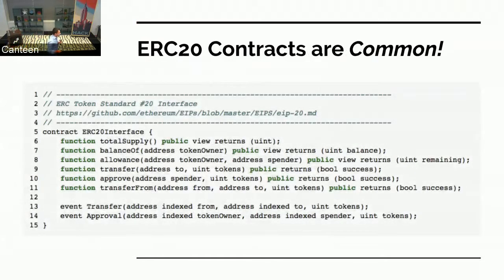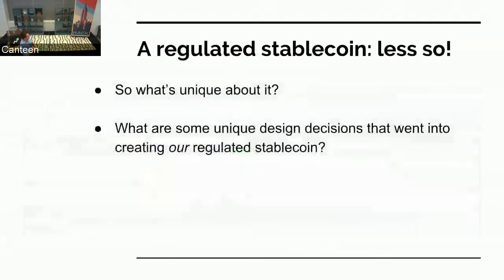ERC-20 contracts are common — you should know this like the back of your hand if you're interested in Ethereum. Total supply, balance of, transfer, approve, transfer from, etc. That's common. What's special about it? A regulated stablecoin is not as common. We were one of the first that came up with this. So what are some unique things about being a regulated stablecoin that makes your design of an ERC-20 contract unique?